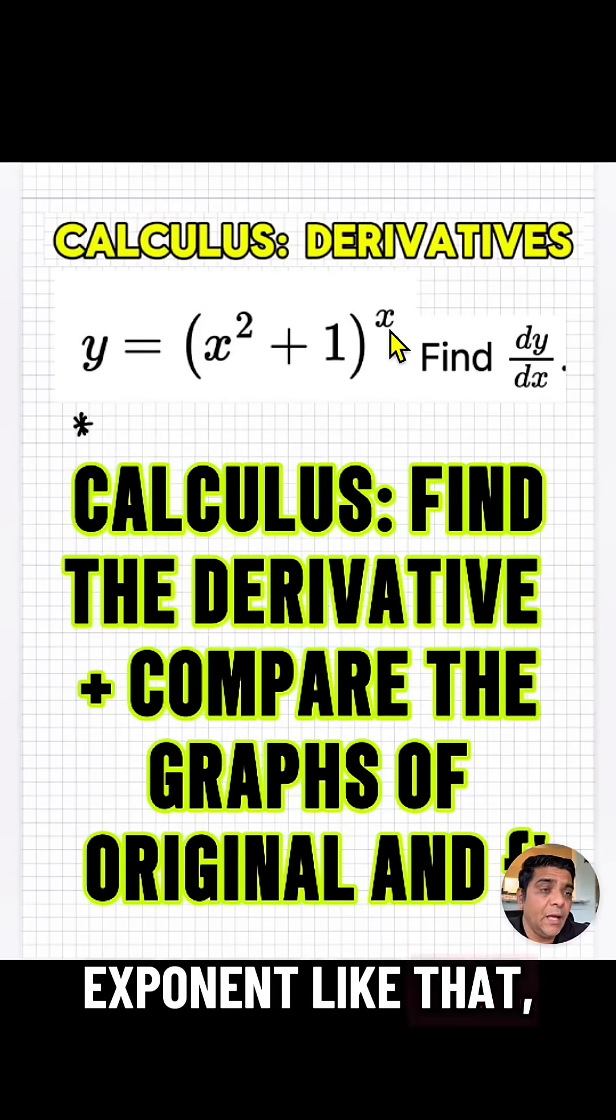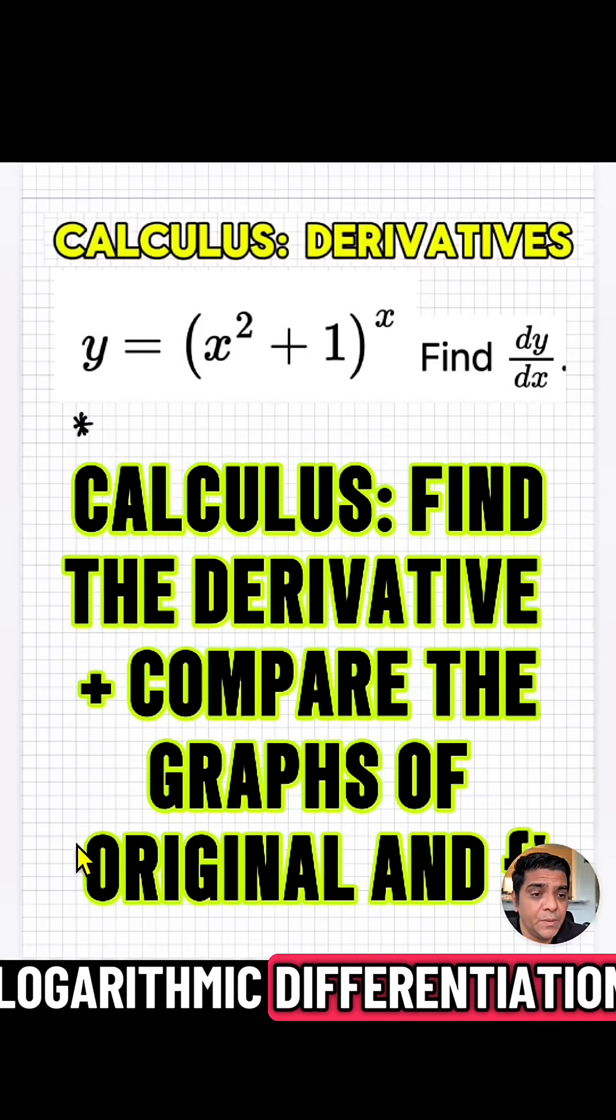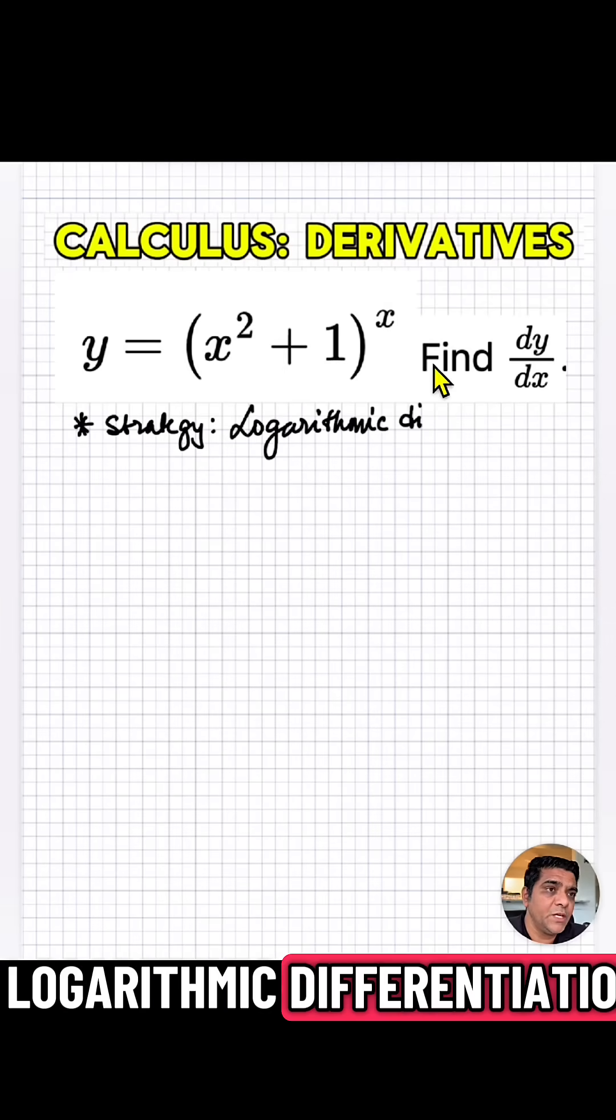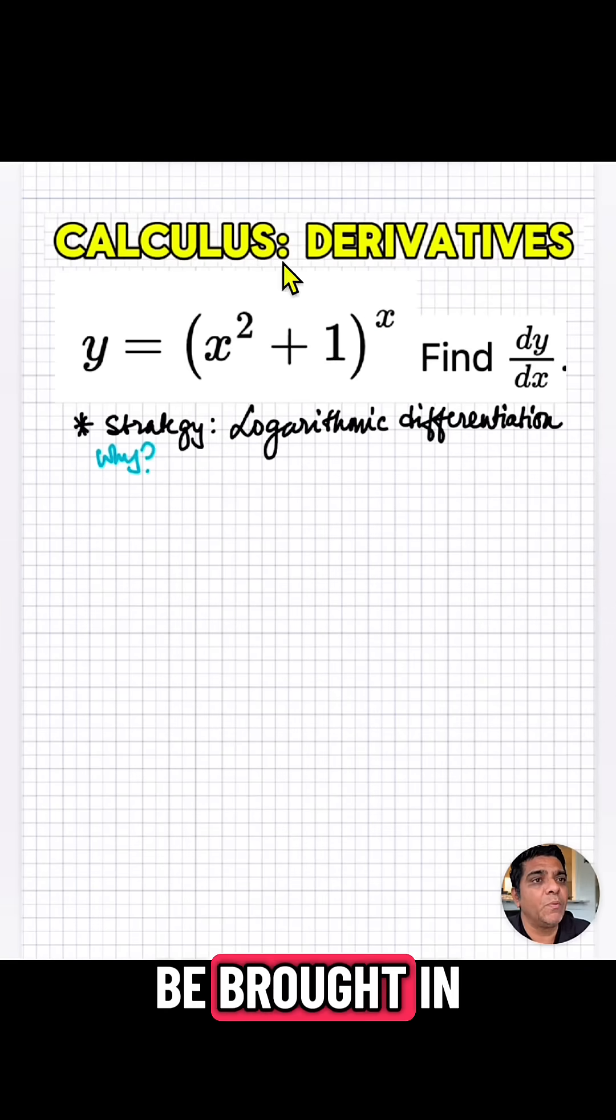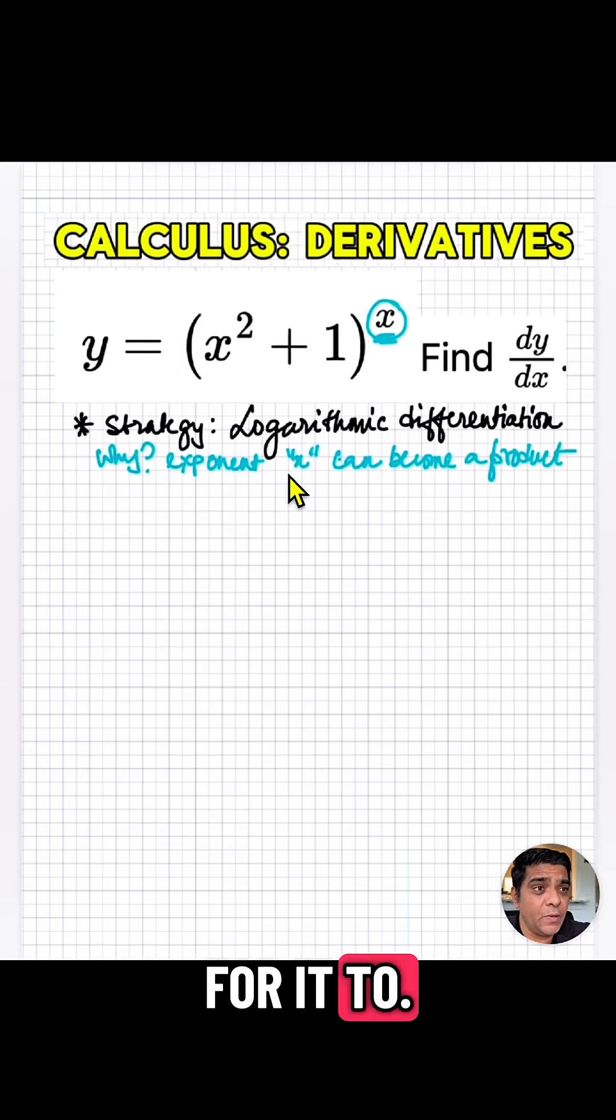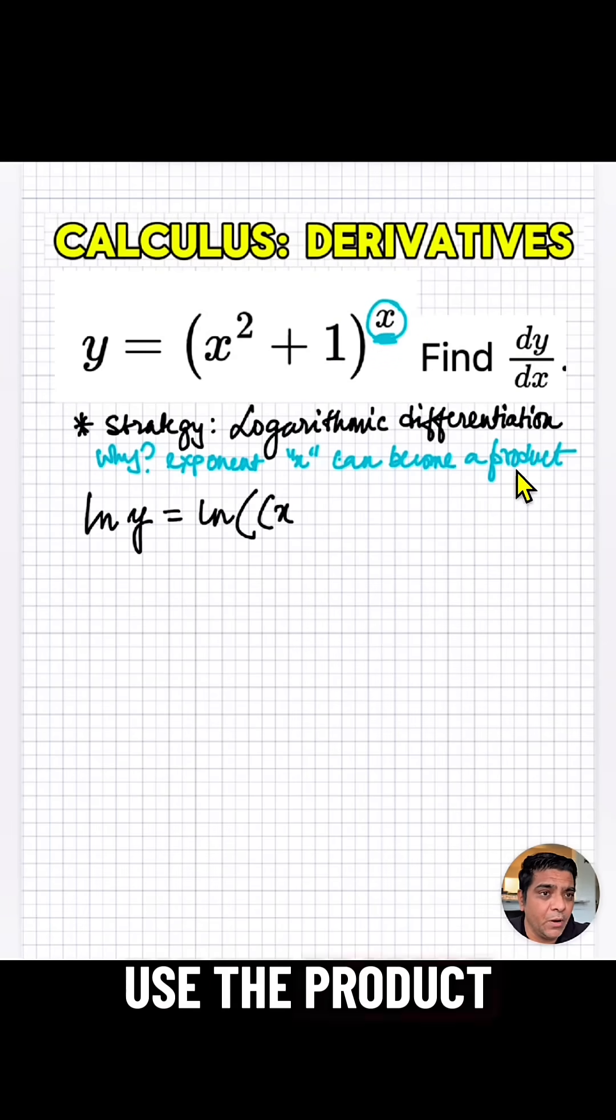So when you have an exponent like that, we are going to use what's called logarithmic differentiation. The strategy is logarithmic differentiation because we want this exponent to be brought in front of the function. Why? Because that'll be much easier for us to take the derivative of, to become a product, use the product rule.